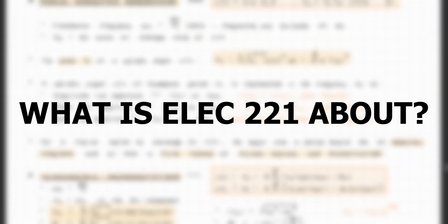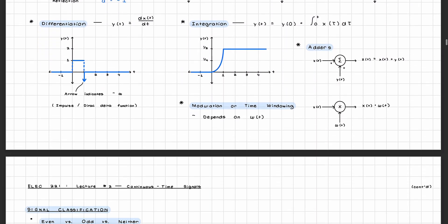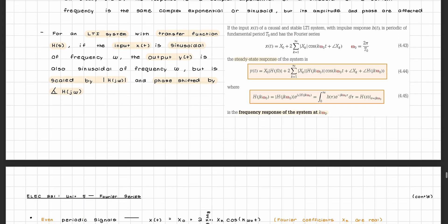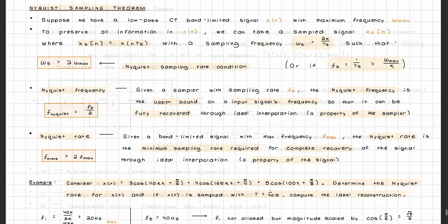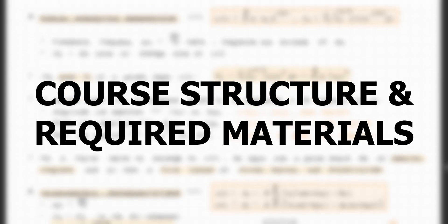So what is ELEC 221 all about? In this course, you will learn all about signals and systems, covering how to classify different signals and systems such as continuous time and discrete time signals and systems, how to perform frequency analysis using Fourier series and Fourier transforms, how signal sampling works, and state-space representation. This course heavily relies on Math 256 or an equivalent differential equations course, so I would recommend brushing up on that material before you head into ELEC 221.